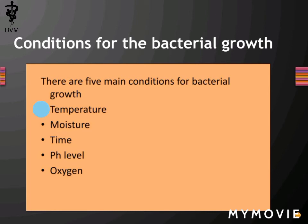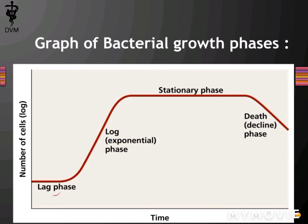Conditions required for bacterial growth include temperature, moisture, time, pH level, and oxygen. To recap the graph phases: lag phase shows no growth, log phase shows rapid growth, stationary phase shows a straight line with no net growth, and death phase shows cells decreasing.